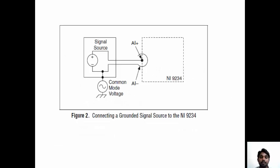This shows connecting a grounded reference signal source to the NI9234. The signal source connects to the positive terminal, and the negative common mode voltage is connected to the negative or grounded terminal. The middle connection is AI plus and around the shell is AI minus — that is one channel input to the NI9234 DAQ model.